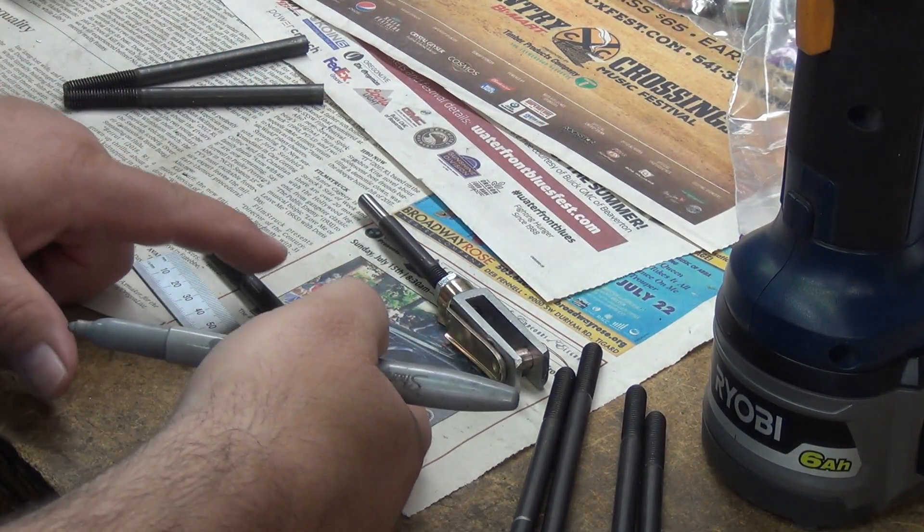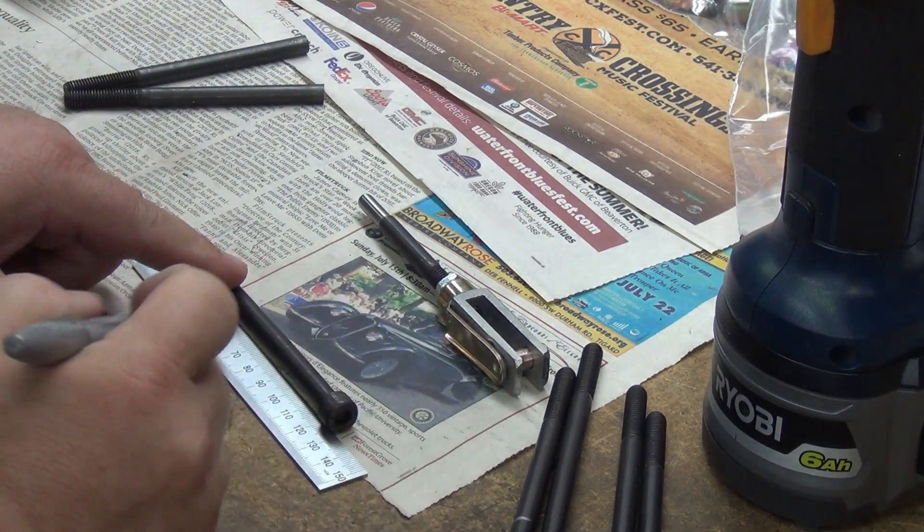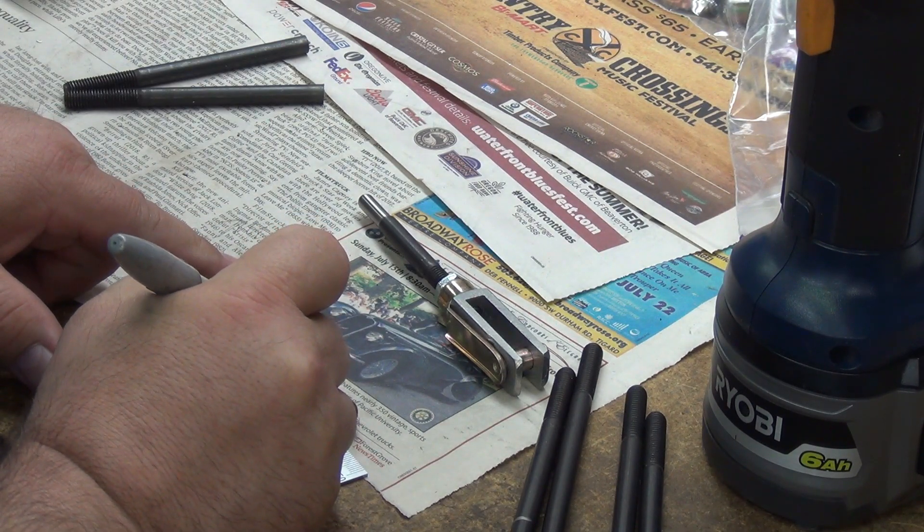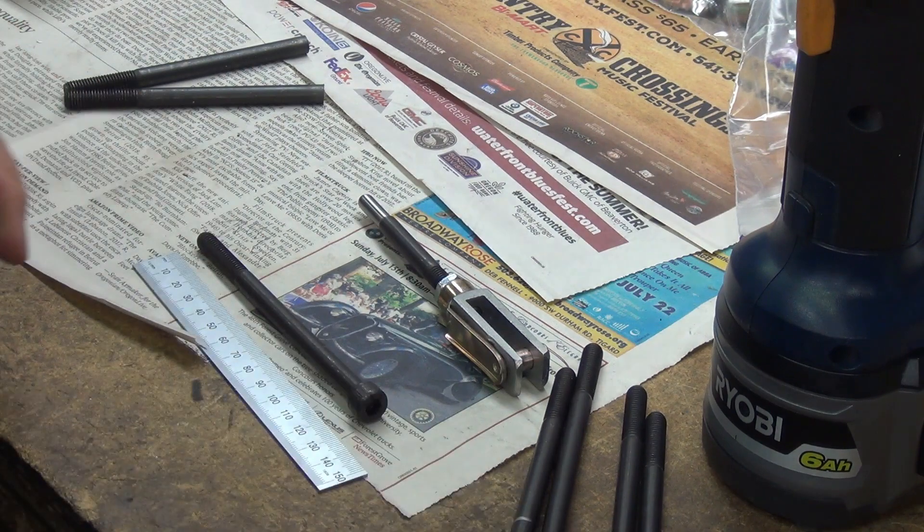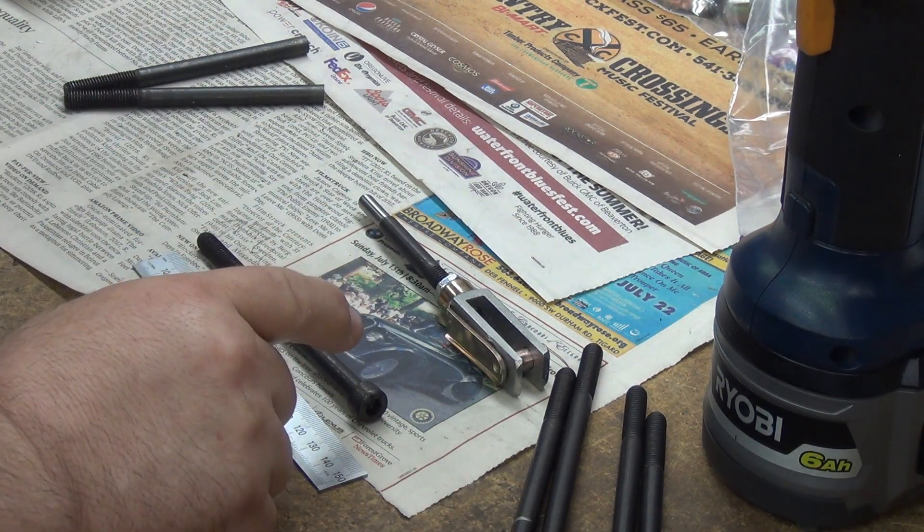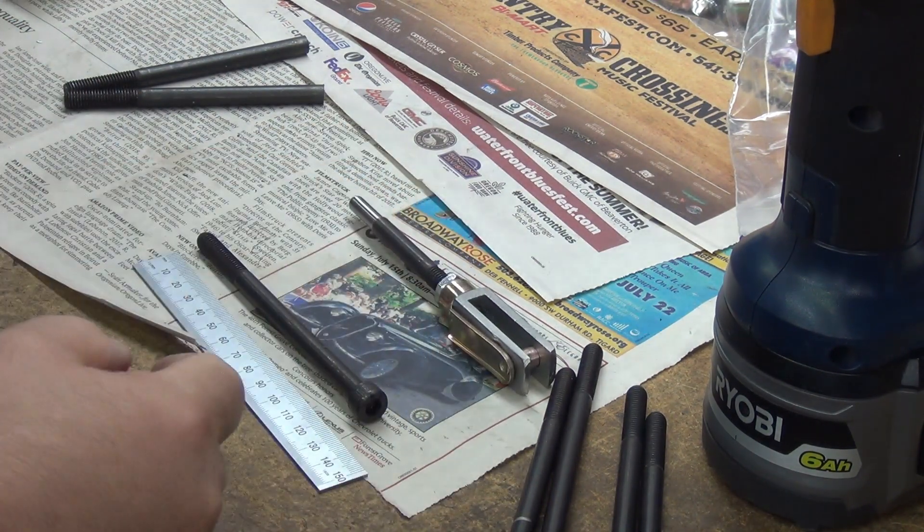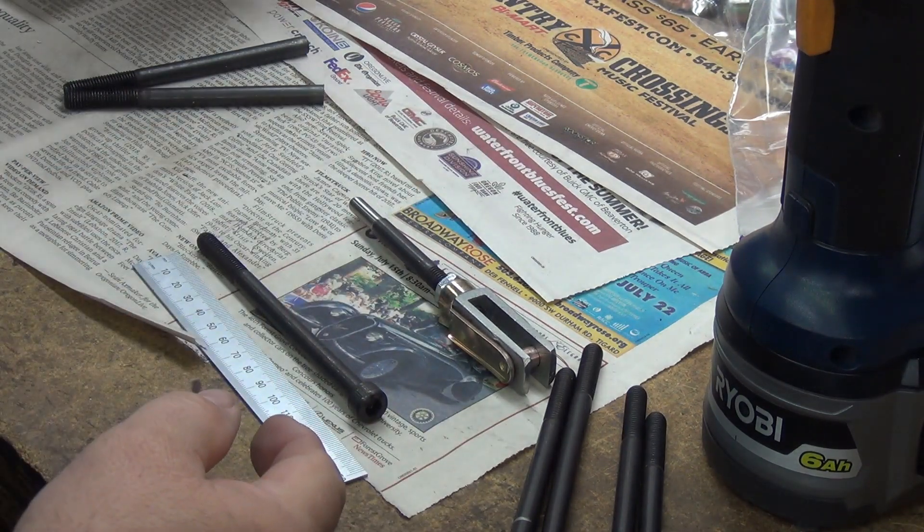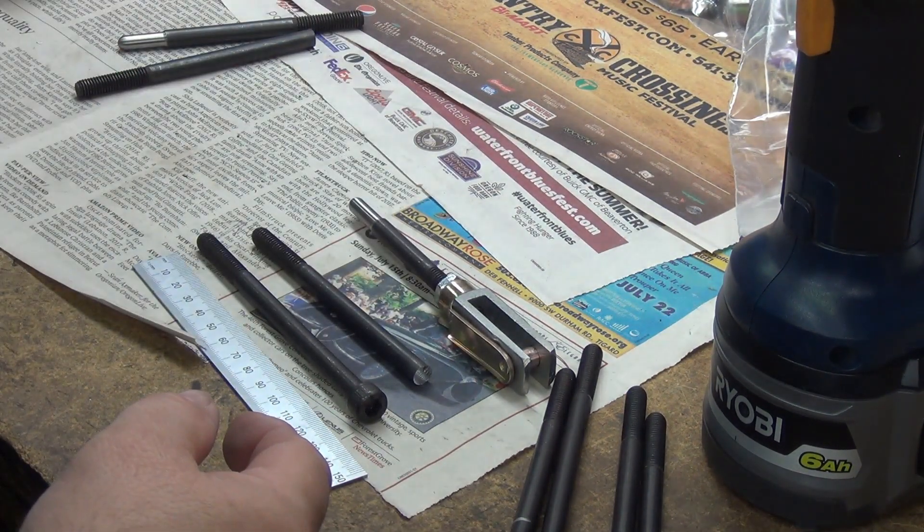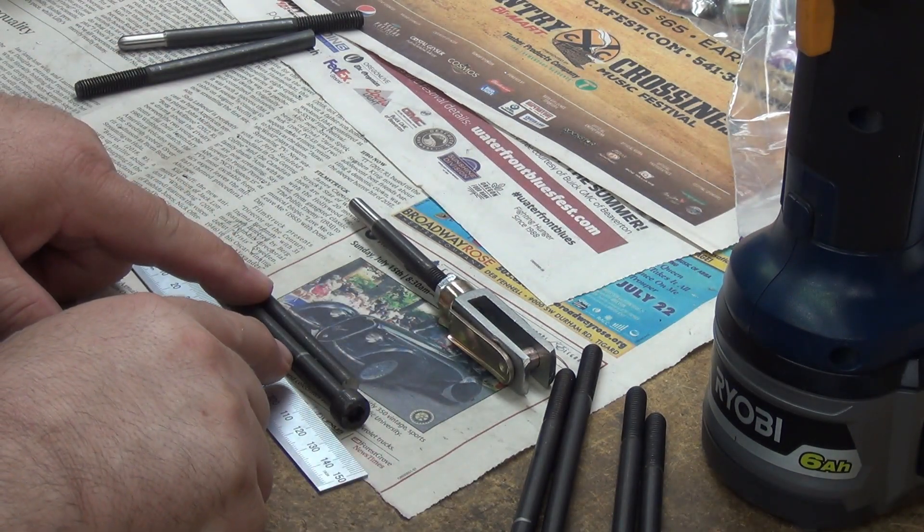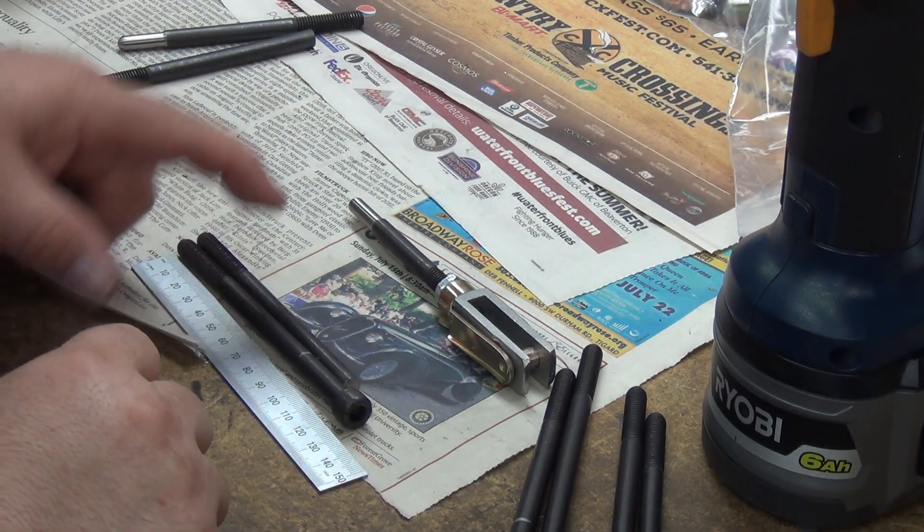This is all I'm doing. I'm just bringing them over, lining them up on the bottom and drawing a line at 90 millimeters. These are 90 for the truck with this particular clevis. With the same clevis, the 410s or 411s are 110 millimeters. There's the mark for 90—it's 30 millimeters longer.